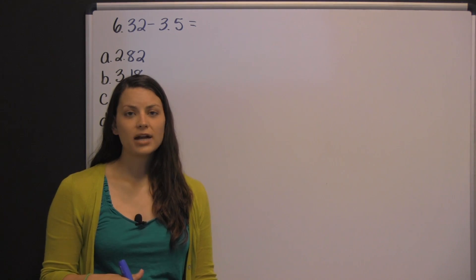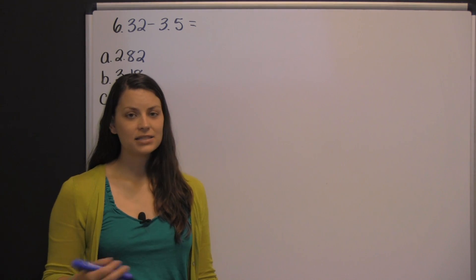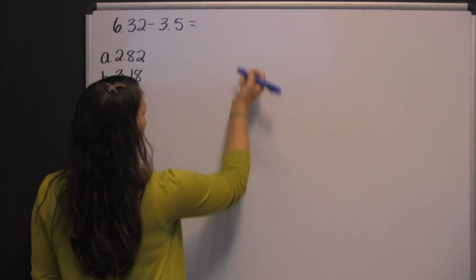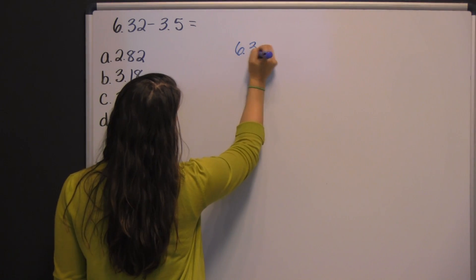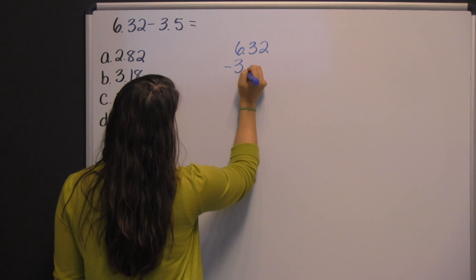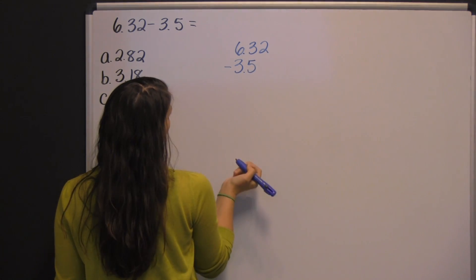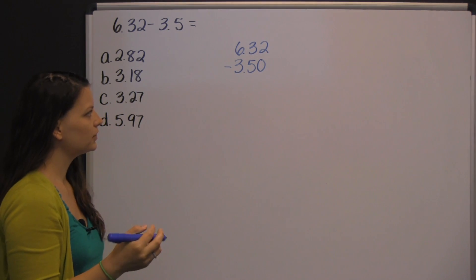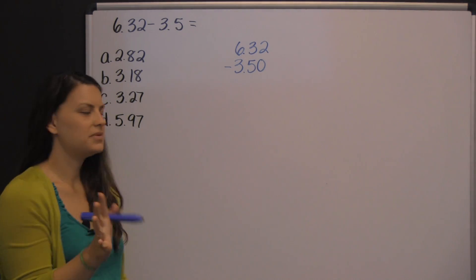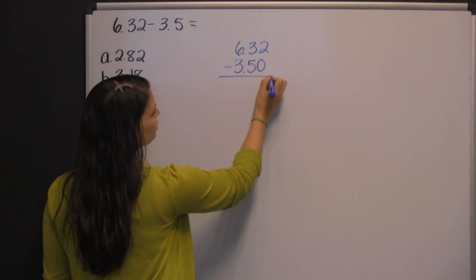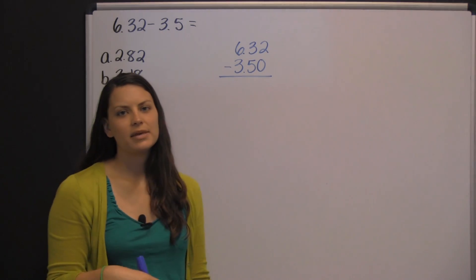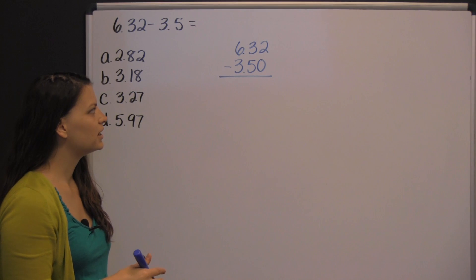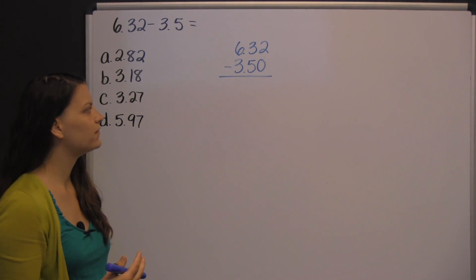What's important when subtracting or even adding decimals is that you line up the decimals. So, six and thirty-two hundredths minus three and five tenths — you can add a zero behind the five so that everything's all even. What I like to do with decimals when adding or subtracting is just think about money. We're taking six dollars and thirty-two cents and subtracting three dollars and fifty cents.